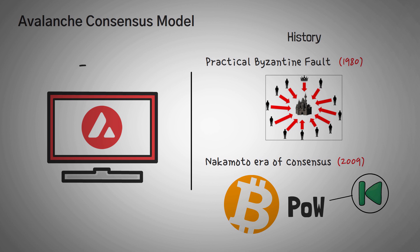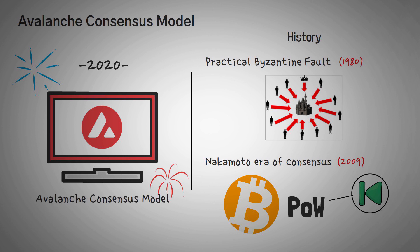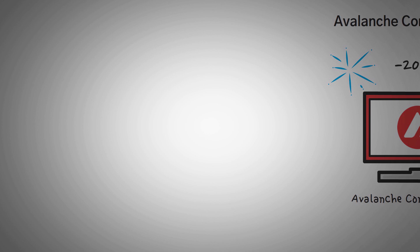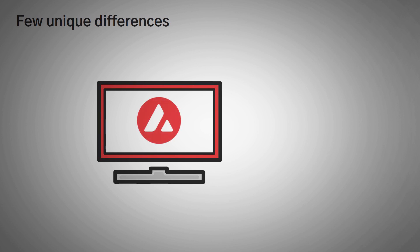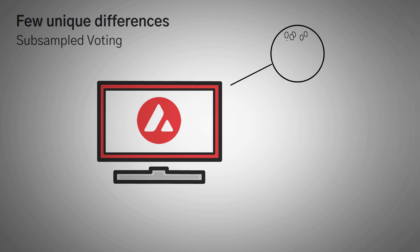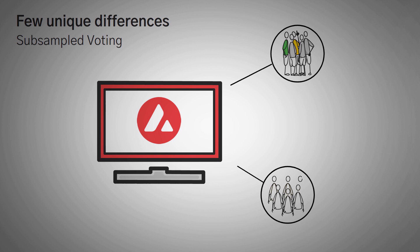Finally, in 2020, Avalanche launched their Avalanche consensus model network. This thing is complicated, so I'm going to attempt to give you a high-level understanding of it without upsetting any of their engineers. Basically, the network follows proof of stake pretty closely, but it does have a few unique differences. The Avalanche model uses a form of sub-sampled voting, meaning there's a large group of people who volunteer to participate in the network and get randomly asked to check things.